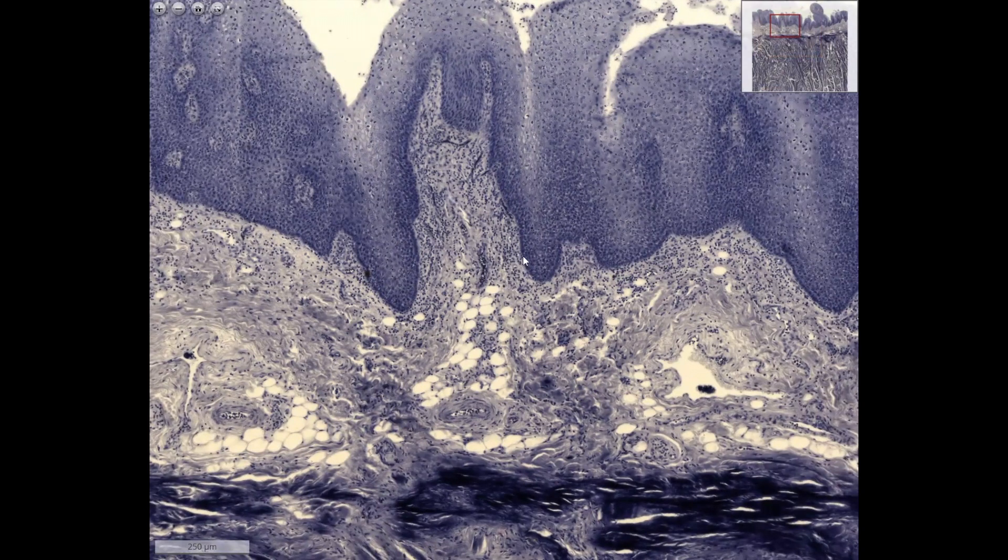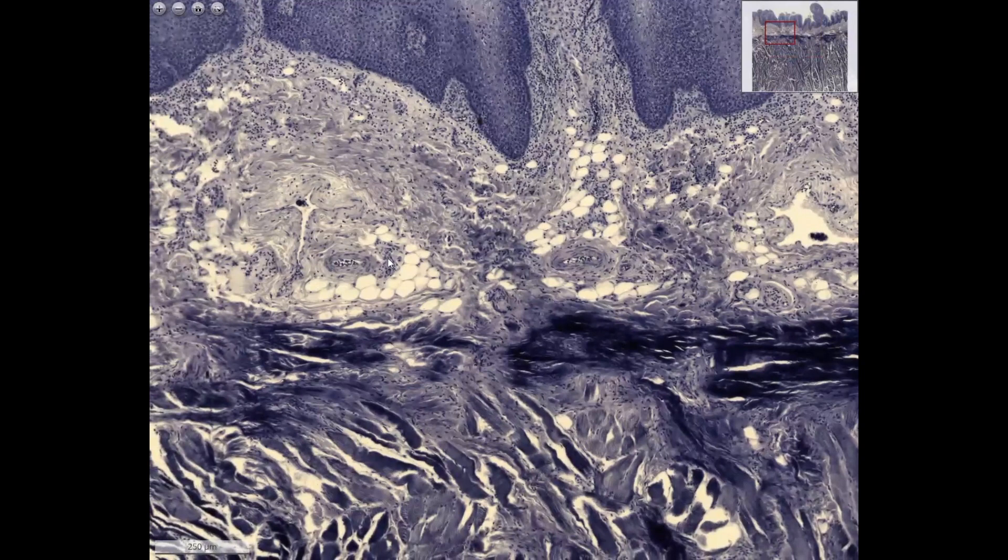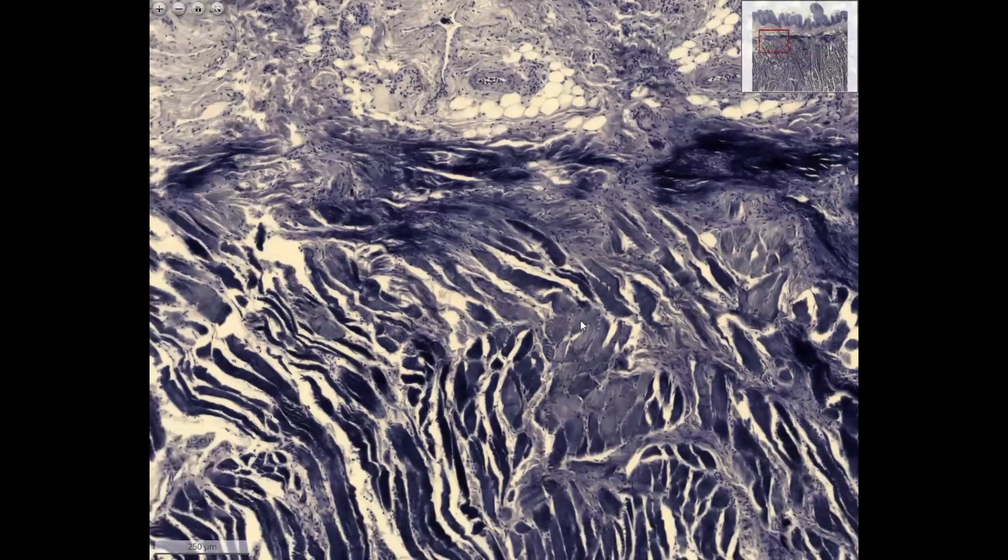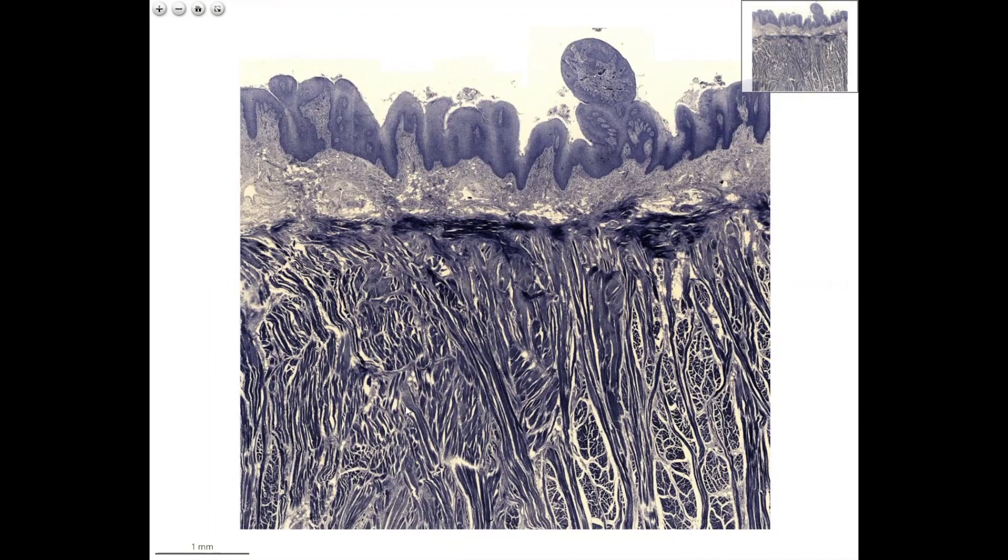Underneath, this is a loose connective tissue, a cell-rich loose connective tissue with many lymphocytes. Deeper, fat cells also appear. And underneath, here you have the skeletal muscle fibers in another specimen, where you don't have salivary glands between the muscle fibers.